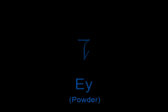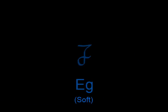The first of these letters for the back of the mouth is Ey. It has a meaning of powder and is used in words to describe graininess, dust, and pollen. The second letter is Eg, which means soft and is used in words to describe molding,